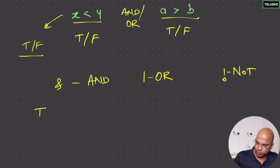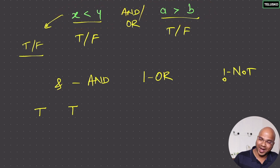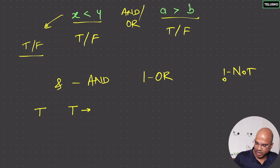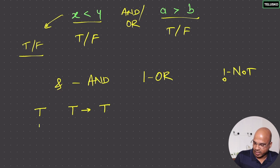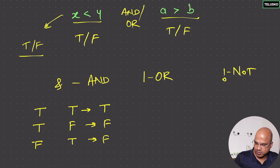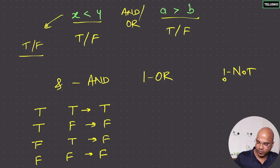Let's look at the AND operation truth table. If the first condition is true and the second is also true, the output is true. If one is true and one is false, the output is false. If the first is false and the second is true, it is false. If both are false, it also gives you false. So with AND, both must be true for the output to be true.